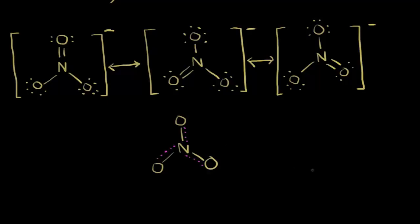One way we know the ion looks more like this hybrid is because of bond length. When the ion is measured, all the nitrogen-oxygen bonds are the same length. If one resonance structure were the true picture, the double bond would be shorter than the single bonds — but that's not the case. So it's actually more of a hybrid with the electrons delocalized throughout. That's the idea of resonance structures.